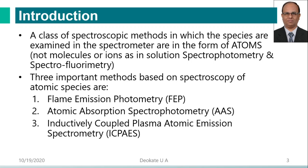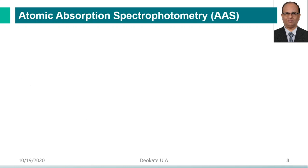There are three important methods based on the spectroscopy of atoms. That includes flame emission photometry, also known as atomic emission photometry, which we studied in the last lecture. Today we are going to study Atomic Absorption Spectroscopy, AAS, and then Inductively Coupled Plasma Atomic Emission Spectroscopy, ICPAES, which is a modified form of atomic absorption spectroscopy.